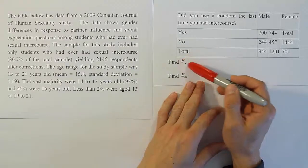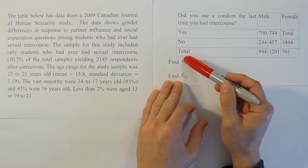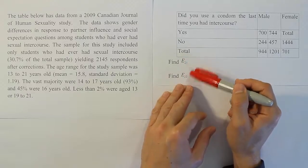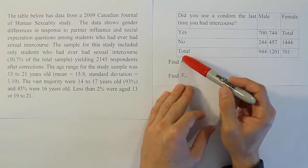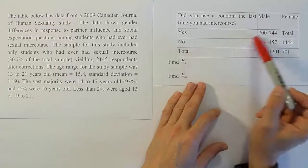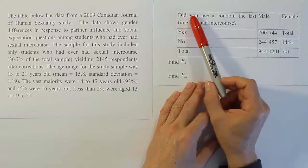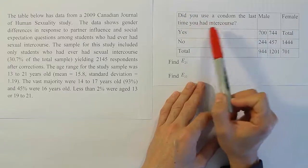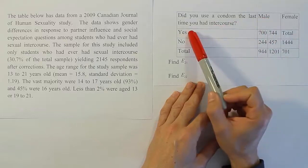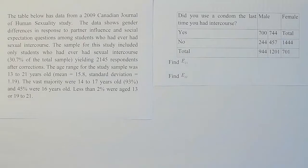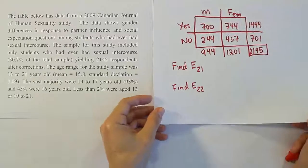The problem asks us to find the expected cell counts for cell 2,1 and cell 2,2. I'm going to talk about how to read this notation, but I'm going to have a drawn version of this table to work with for this problem so we don't have to look at it all out of whack. Let's read the question involved in the table. Did you use a condom the last time you had intercourse? So it's either males or females responding, and they're either saying yes or no to that question.